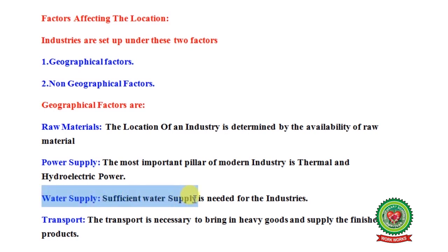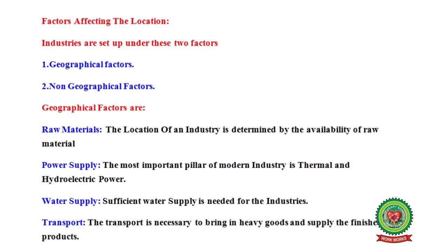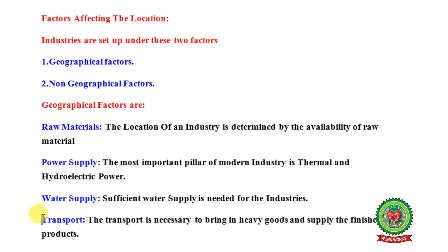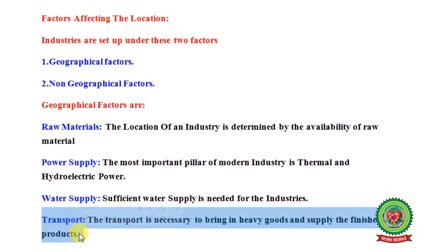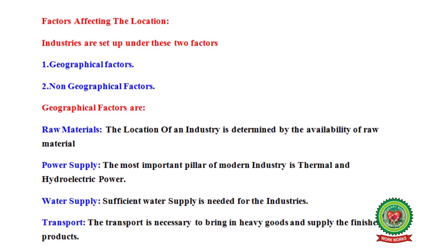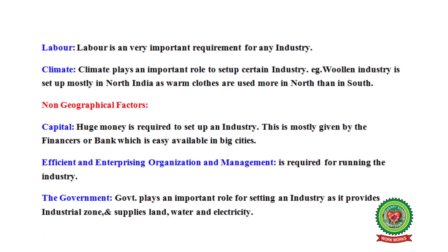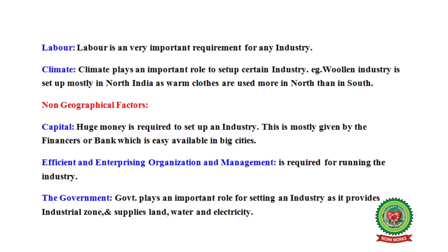Third is water supply — sufficient water supply is needed for industries. Fourth is transport — transportation is necessary to bring in heavy goods and finished products; with proper transportation we can send finished goods to nearby markets and receive required materials. Fifth is labor — labor is a very important requirement for any industry; without labor, work in factories is not possible.